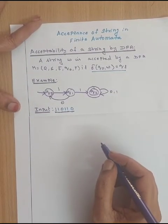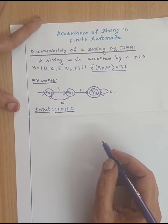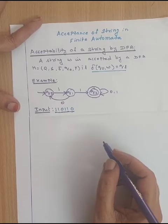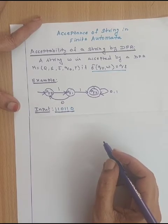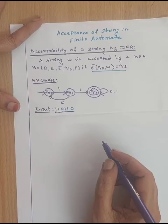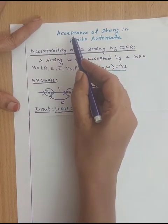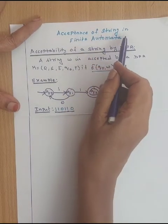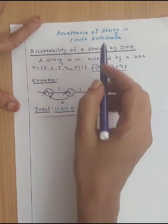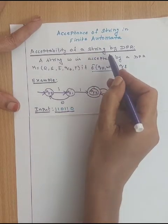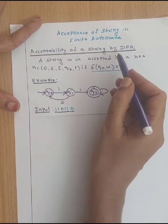Hello everyone. In our previous lecture we have seen about the topic introduction to finite automata. There are two types of finite automata, namely DFA and NFA. Now let us see about the topic acceptance of string in finite automata. First we will discuss the concept in DFA.